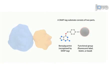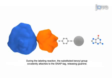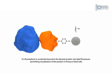The functional group may be biotin, a bead, or a fluorescent group, which are available in a variety of colors. During the labeling reaction, the substituted benzyl group covalently attaches to the SNAP tag, releasing guanine. If a fluorophore is coupled to the desired protein, the label fluoresces, permitting visualization of the protein in living or fixed cells.